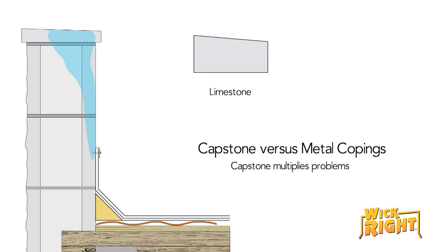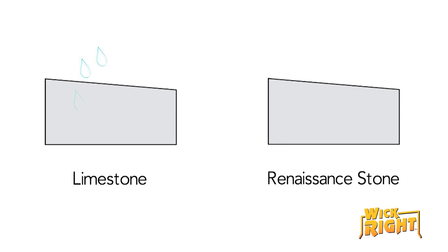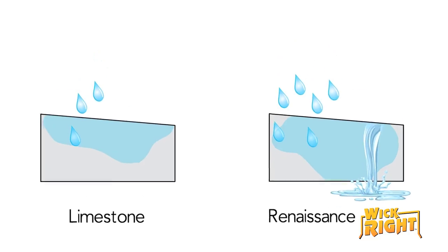Capstones are made of many different substances, but limestone and renaissance stone are the most common. Water meanders through limestone, soaking the entire stone before dripping into the walls. Renaissance stone is actually just manufactured concrete. A heavy rain pounding on renaissance stone will pour into the wall quickly.